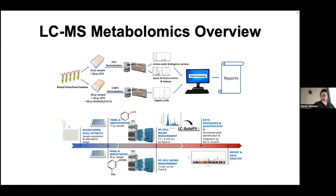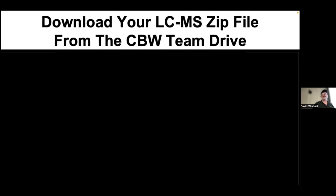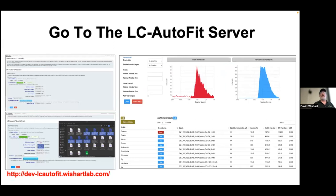For LCMS — targeted metabolomics — the protocol was done for you in the lab. Kits were run, things were derivatized and processed through the LC-MS. Now you have the data files, available at the ridiculously long URL on the Google Drive. Download your file with your name on it — it's a zip file, so choose the one with your name, not someone else's. Then go to the LC AutoFit server. Unlike GCMS and NMR, everyone can use the same single server for this one.